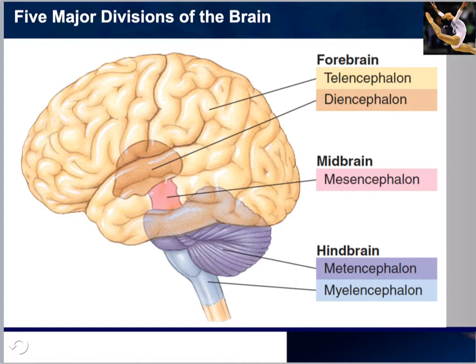The myelencephalon is often referred to as the medulla. Looking at the human brain, within the telencephalon we have the diencephalon, mesencephalon, metencephalon, and eventually the myelencephalon as we go down to the spinal cord.